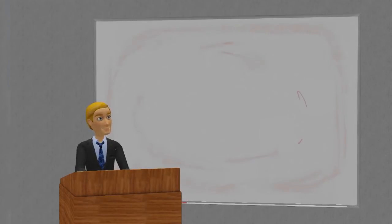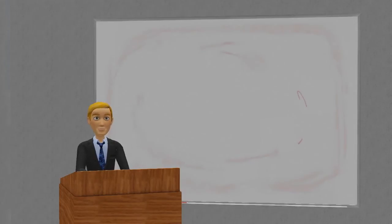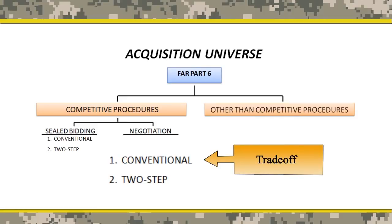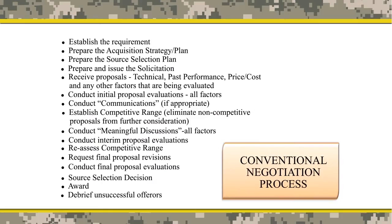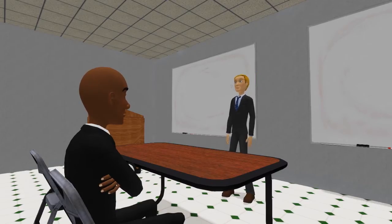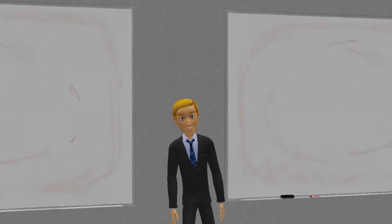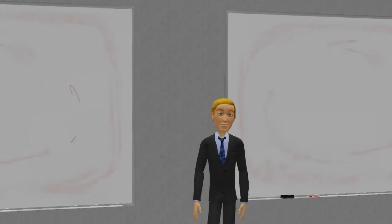Now let's move on to talk about the process used to accomplish a source selection. The discussion of source selection using sealed bidding will be left for another day. Due to its inherent complexity, let's focus on competitive negotiation using a trade-off basis for award. The competitive negotiation process must follow a definite and distinct series of steps so that the proper information is considered when making the award decision. These steps must be completed one at a time and in order — the sequence should not vary and none of the steps should be skipped.